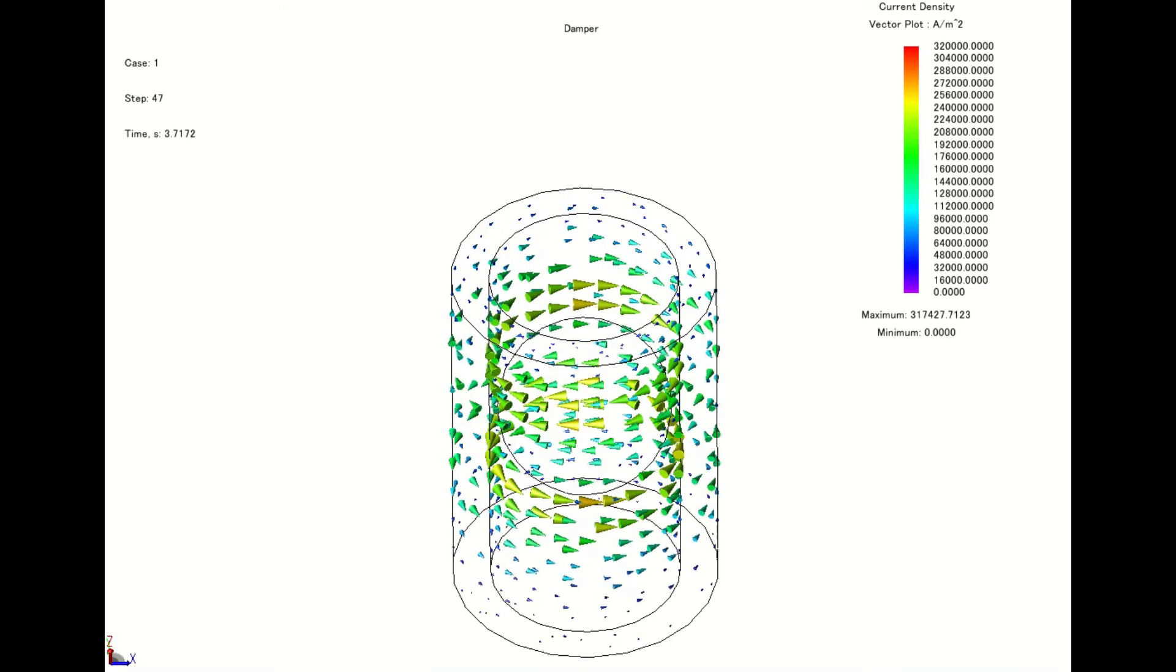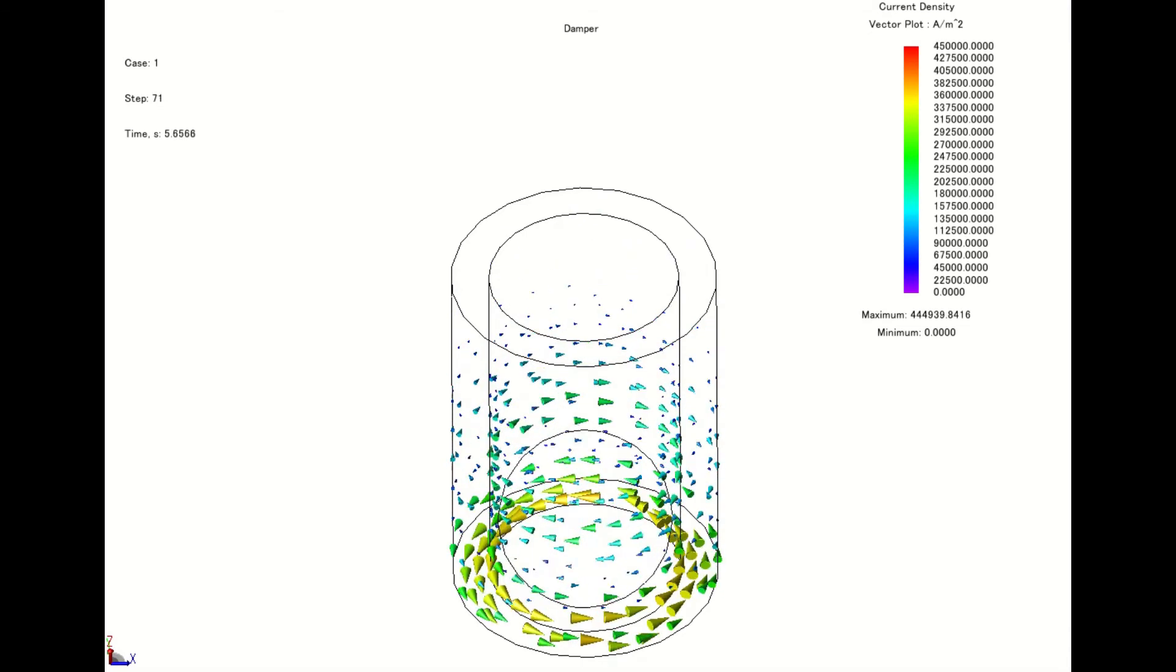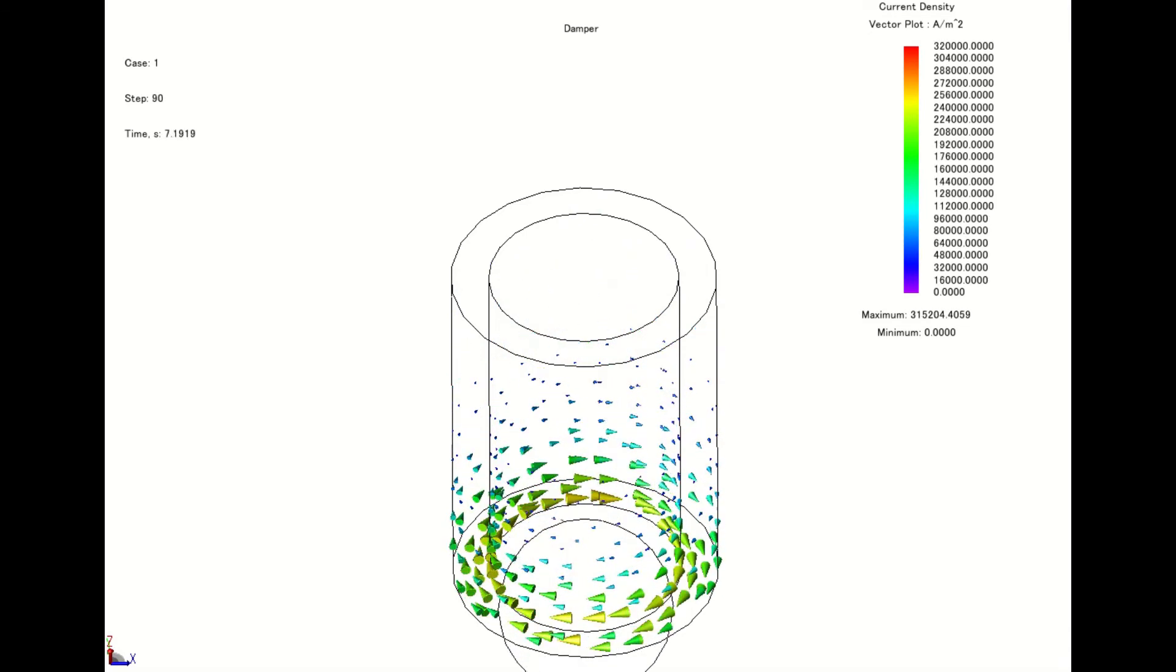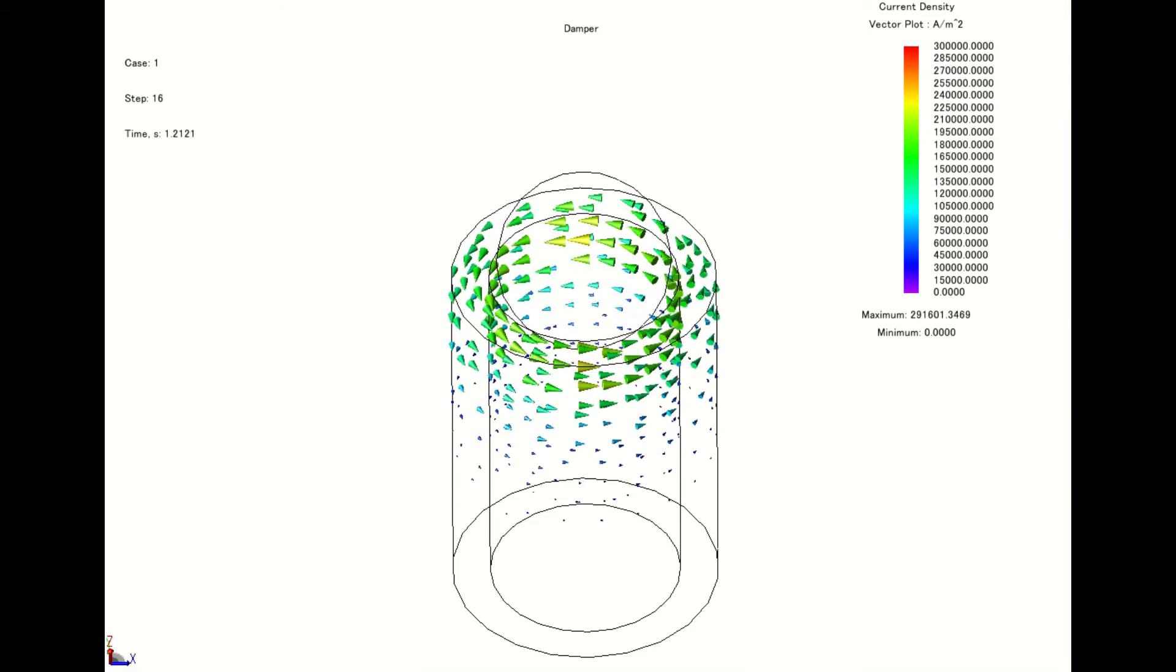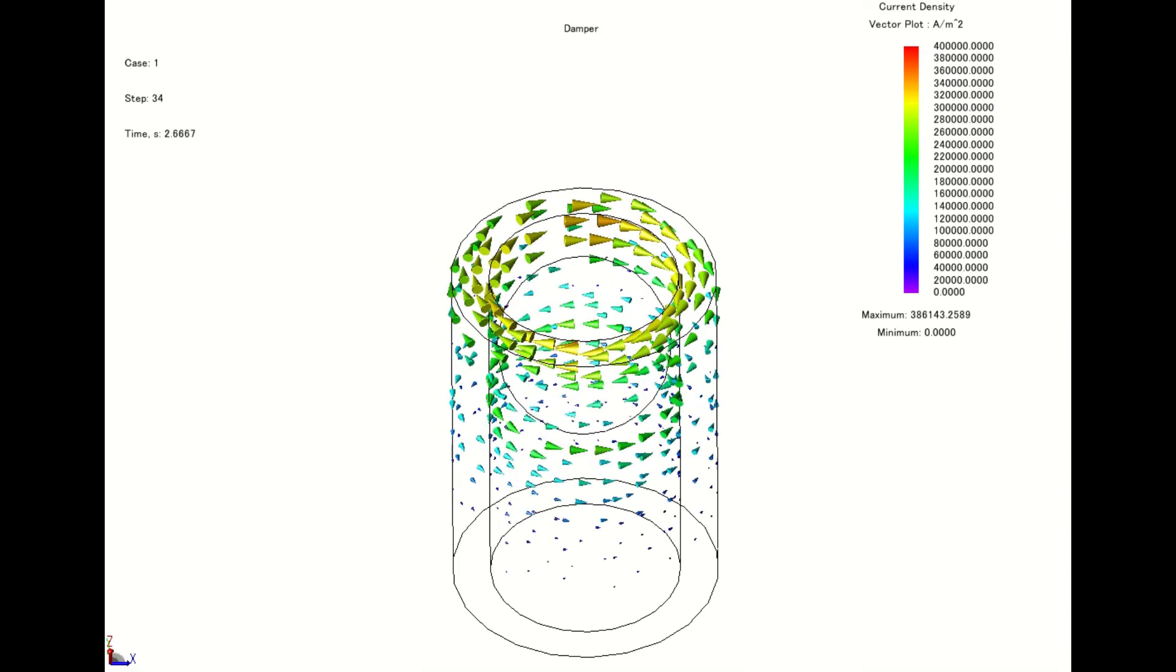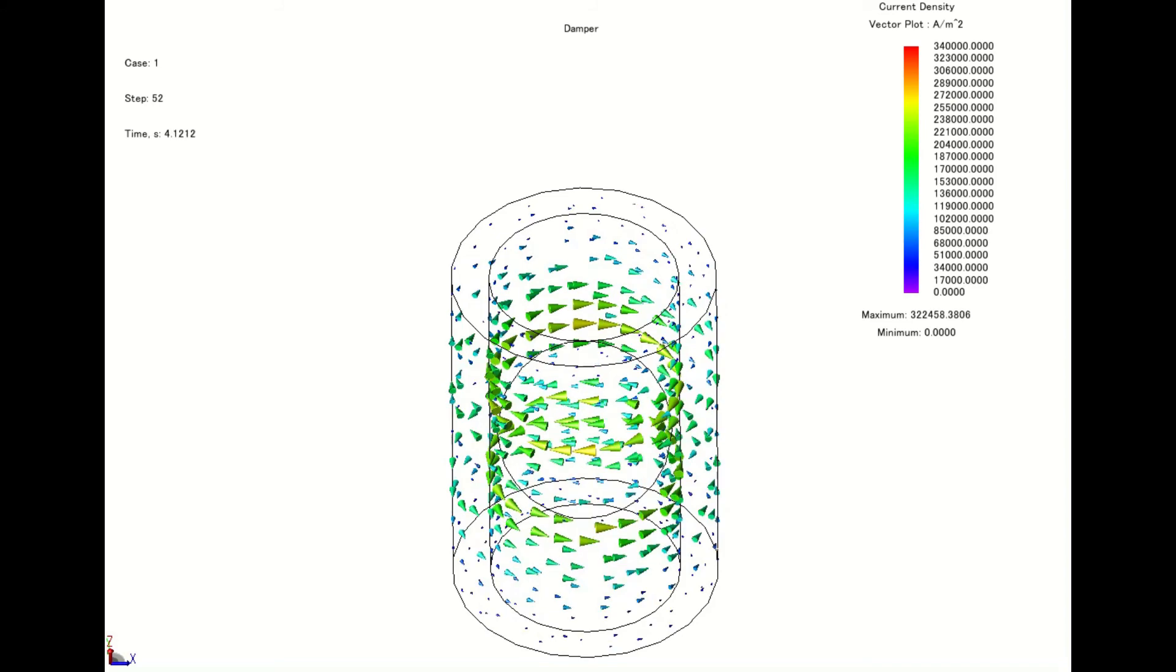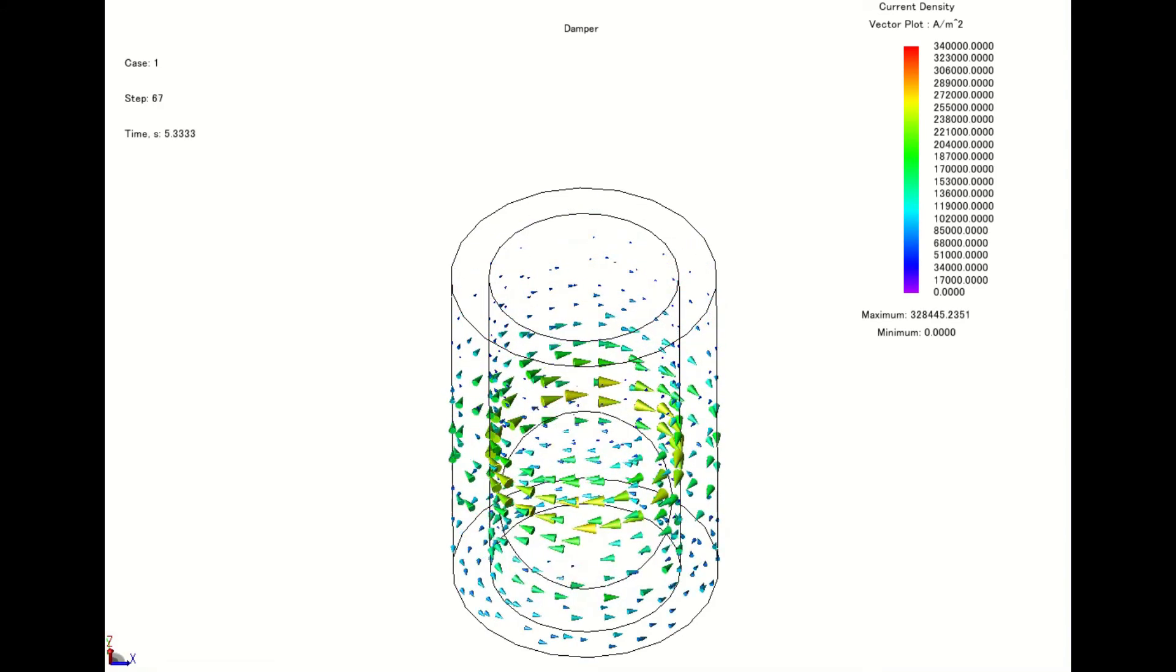Currents below the permanent magnet induce a magnetic field in the opposite direction, trying to counter the flux increase. Currents above the permanent magnet try to counter the flux reduction by inducing a magnetic field in the same direction.